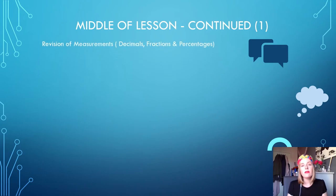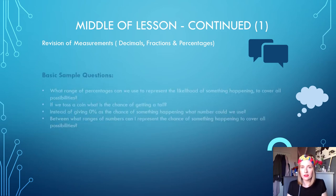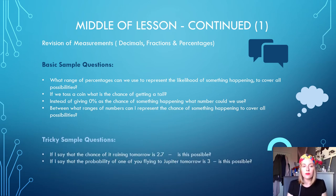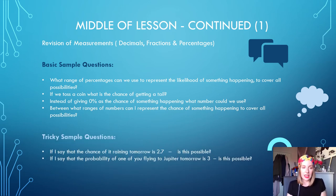Moving on from there we would briefly review the measurements used in probability. I would then assess the class by asking a series of questions such as, if we were to toss a coin what is the chance of getting a tails? Instead of giving zero percent as the chance of something happening, what other number could we use instead? After these I would offer a couple more leading questions to see if they've really understood the basic concept. For example, if I say that the chance of it raining tomorrow is 2.7, is this possible?